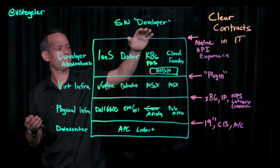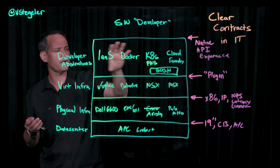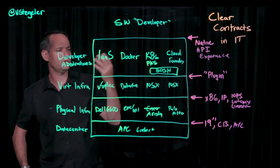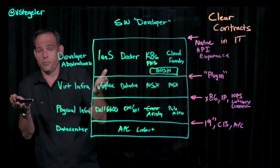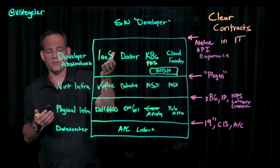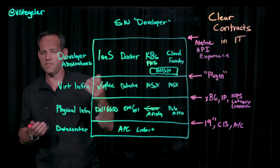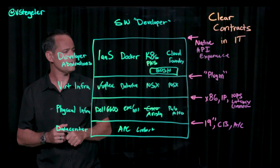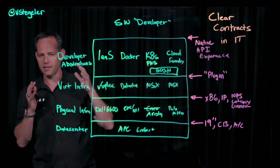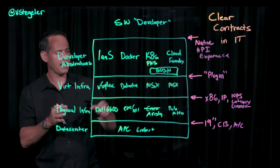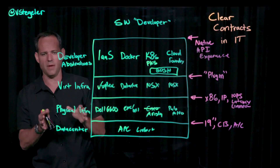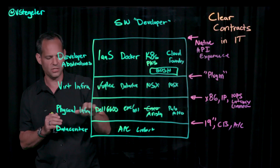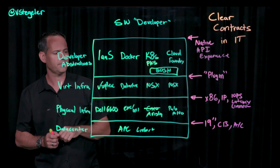My clear contract with the software development team, if I'm running the developer abstractions layer, is that I provide that API experience. That could give me the opportunity to displace maybe an IaaS — like OpenStack. Maybe I'm running some vendor's version of OpenStack, and I want to provide VMware Integrated OpenStack instead. Provided that gives the same upstream experience, we're good to go. Same with Kubernetes and PKS. Hopefully this gives you a good model to think about as you're staring at this stack, and helps you understand the power of giving these teams the independent decisions to choose the technology that affects their job function. Thanks for watching.